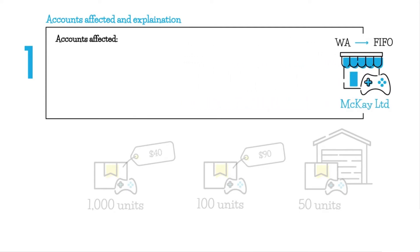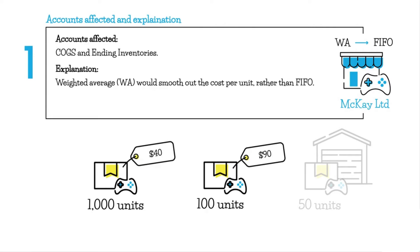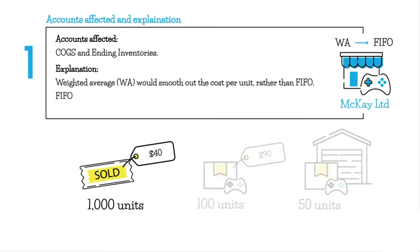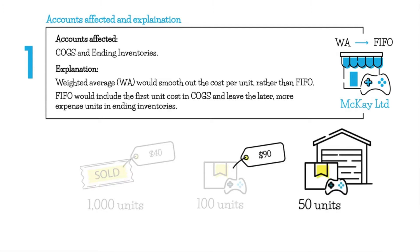Moving from weighted average to FIFO is going to change our cost of goods sold account and also ending inventories. Weighted average smooths out the unit cost because it is an average measure — it averages the $90 and $40 and spreads it over both cost of goods sold and ending inventories. FIFO, on the other hand, uses the first units purchased as the first units sold; those appear in cost of goods sold, leaving the later, more expensive units at $90 per unit in ending inventories.